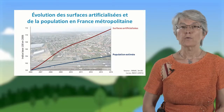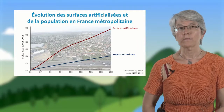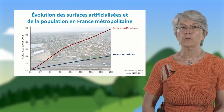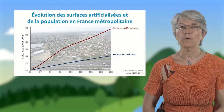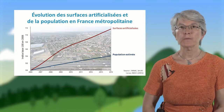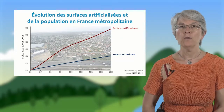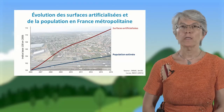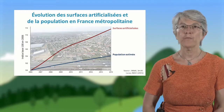Suite à ce constat, et donc à la prise de conscience que les politiques de préservation de l'environnement menées depuis 1976, qui protégeaient les espaces et les espèces, n'étaient pas suffisantes pour maintenir la biodiversité, une nouvelle approche a été mise en place suite aux Grenelles de l'environnement en 2009 : la trame verte et bleue.